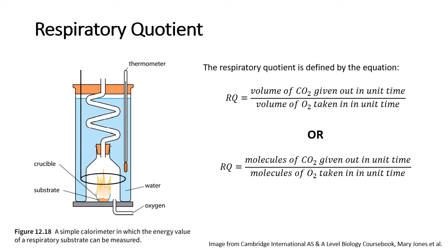The respiratory quotient — this is a number that tells you what is happening during respiration and what kind of substrate you're using. It is defined by an equation: the RQ is the volume of CO₂ given out in unit time divided by the volume of oxygen taken in in unit time. A calorimeter is used to determine how many calories — that is, energy — of a respiratory substance are present in that compound.